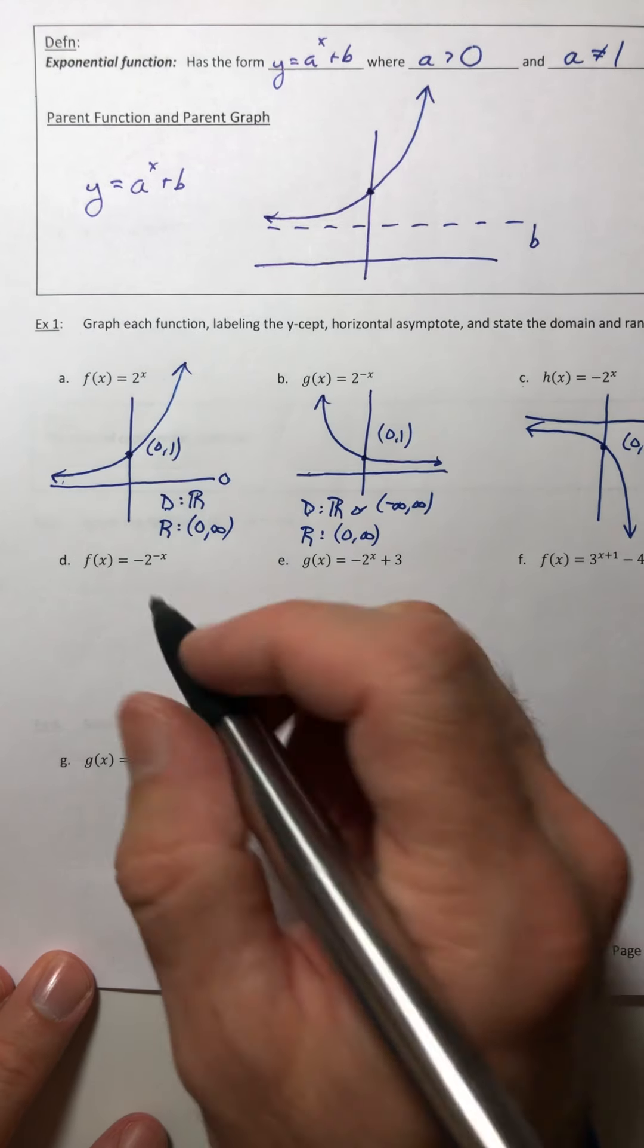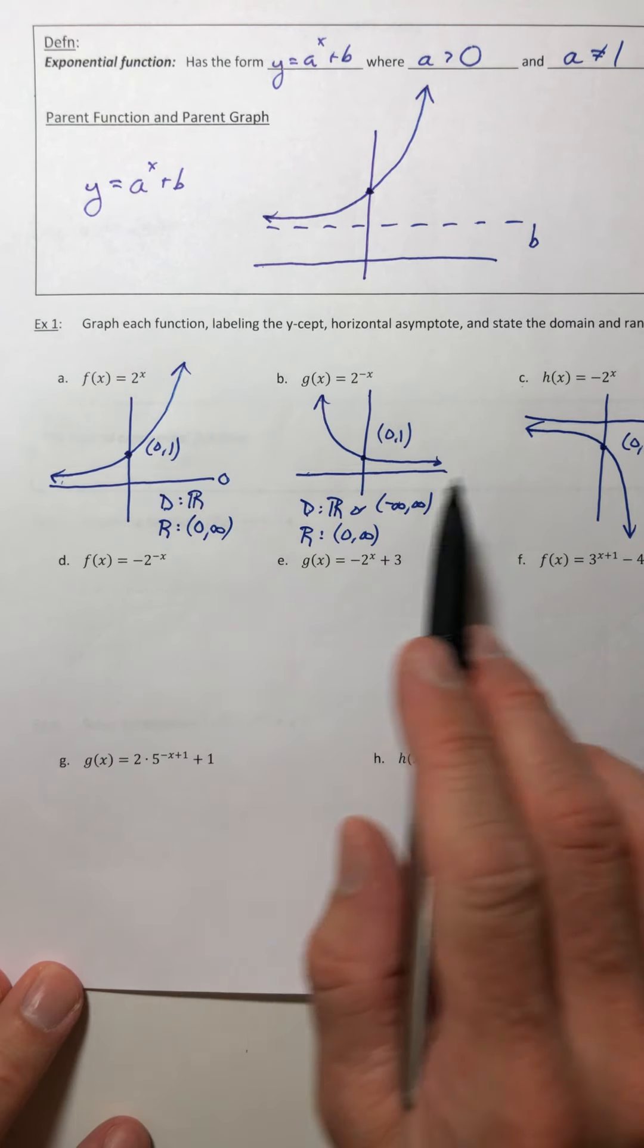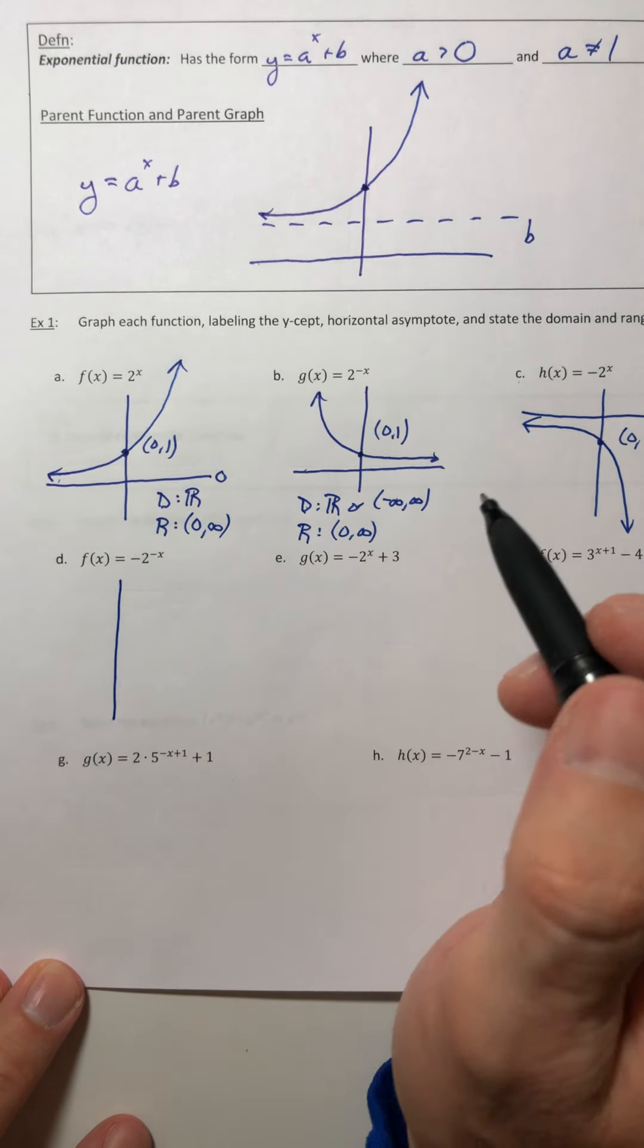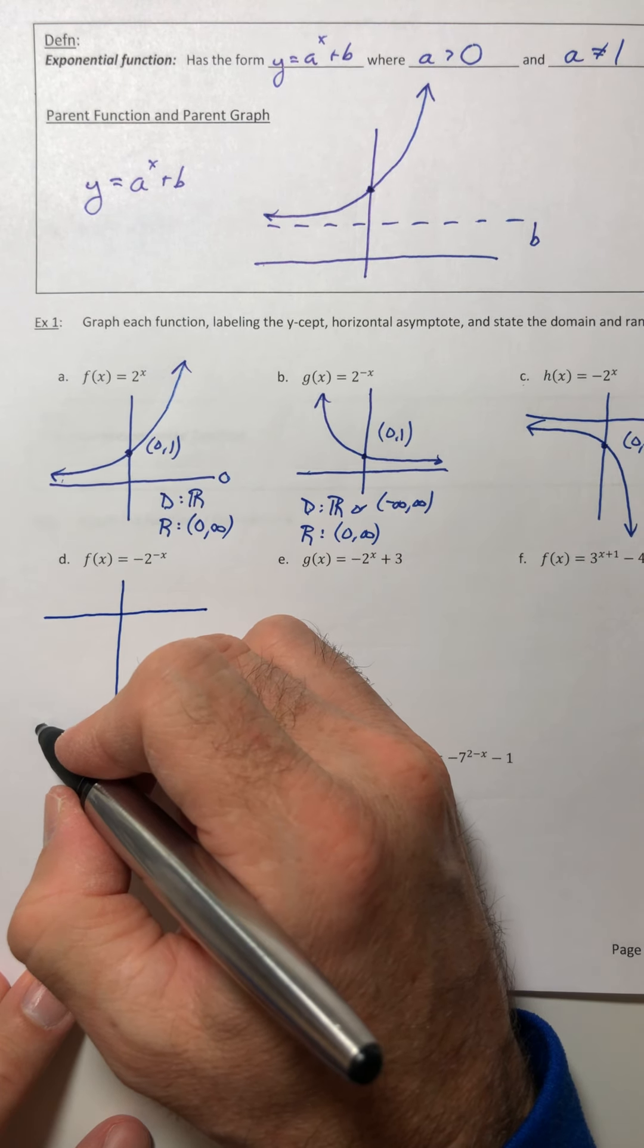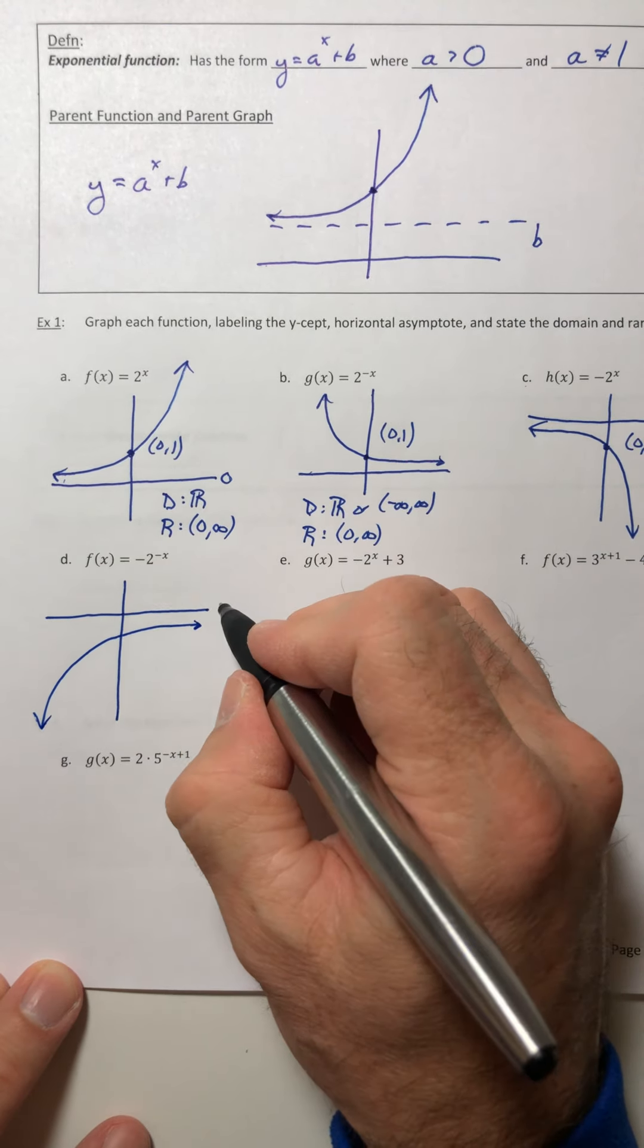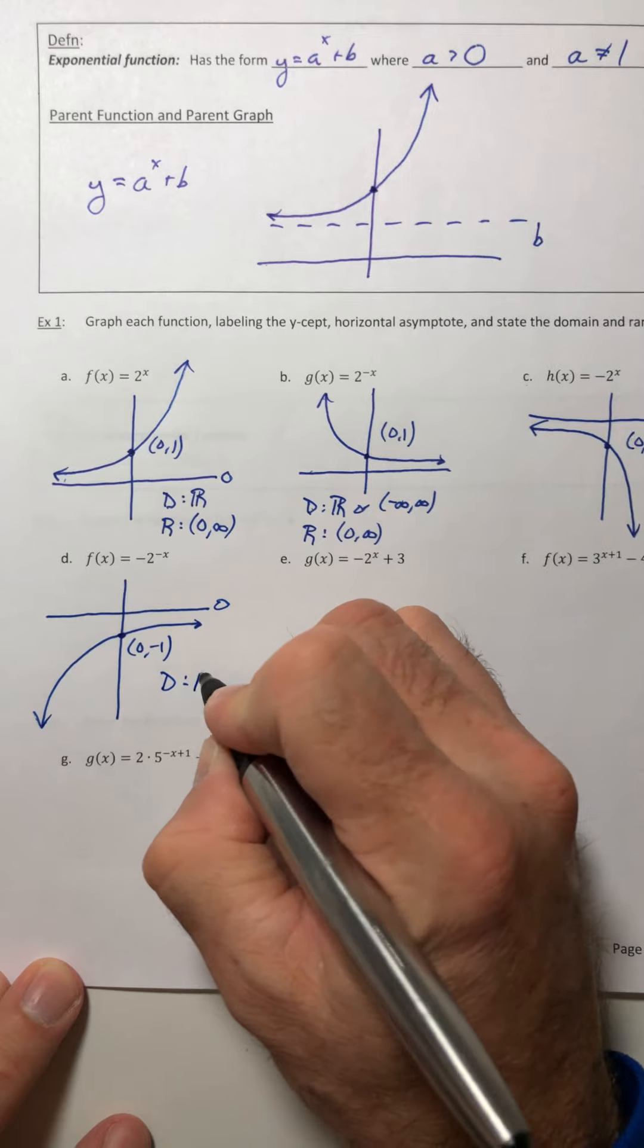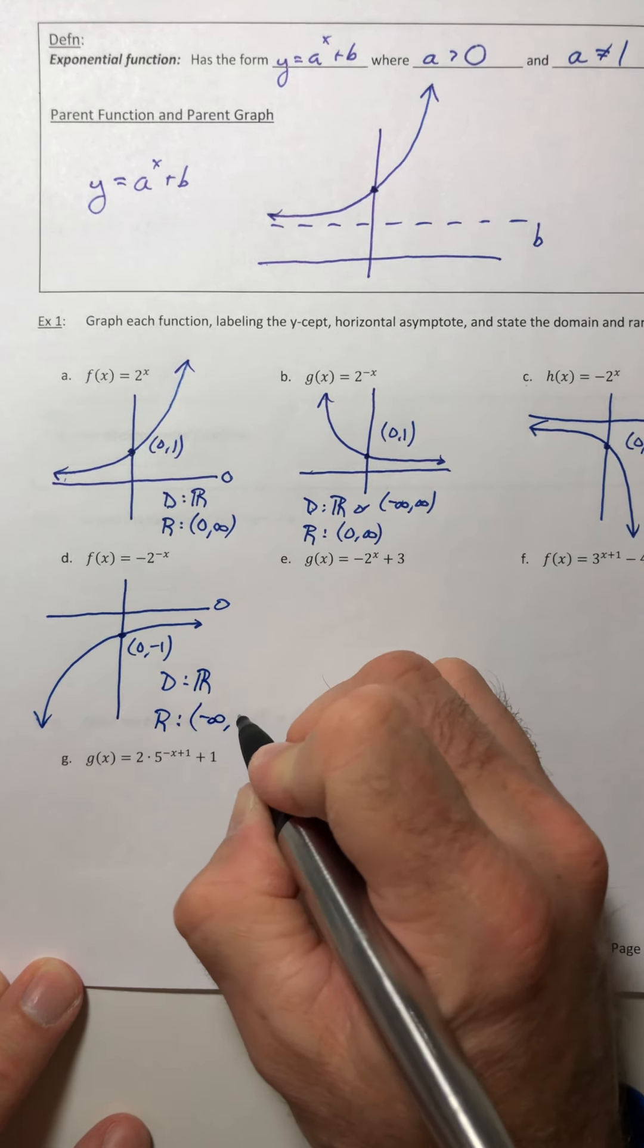Part d. Now you have a negative in front of the 2 and in front of the x, so it's kind of a combination of the two situations here. We have to flip it over the y-axis and flip it over the x-axis. So it's pointing down on the left and flattens out as it goes off to the right. Horizontal asymptote still is zero. The y-intercept is 0, negative 1. Domain all reals, and then the range negative infinity to zero.